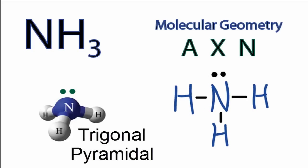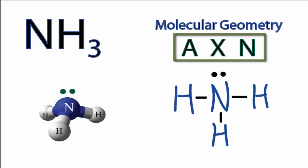We can also use the AXN notation to determine the molecular geometry of NH3. A, that's the central nitrogen there. X, that's the number of atoms bonded to nitrogen, and we have three of those.